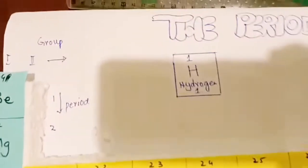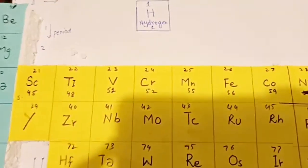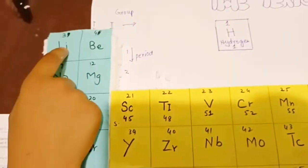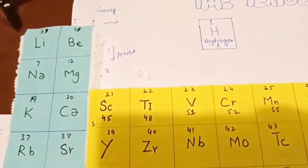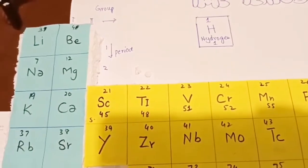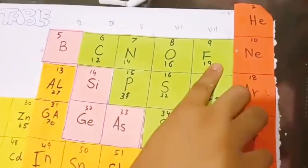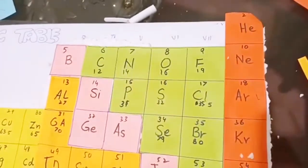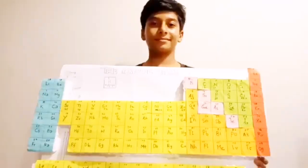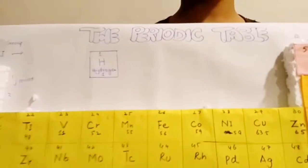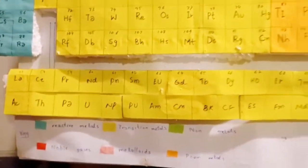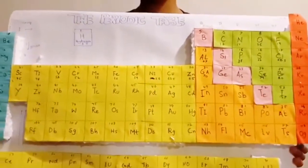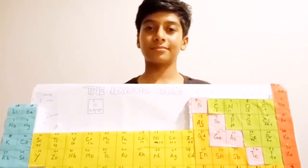Vertical columns are called groups and horizontal rows are called periods. Group 1 is alkali metals. Group 2 is alkaline earth metals. Group 7 are halogens and these are noble gases.